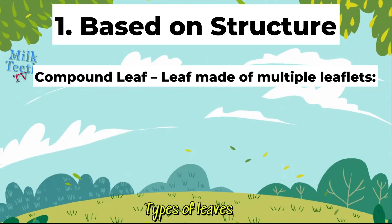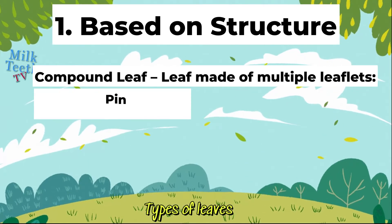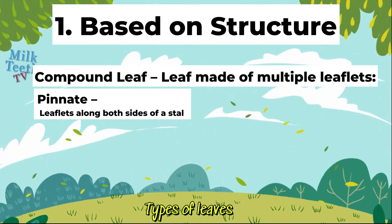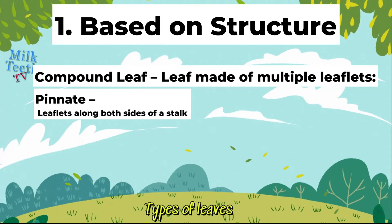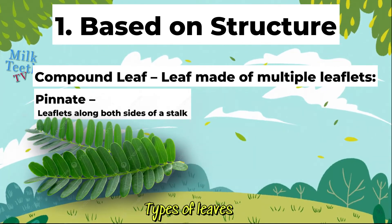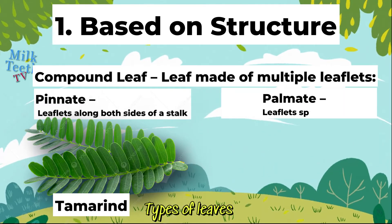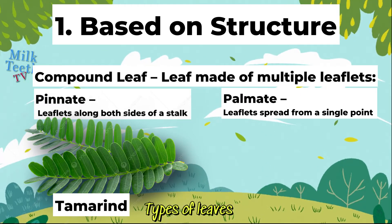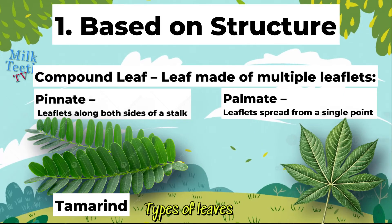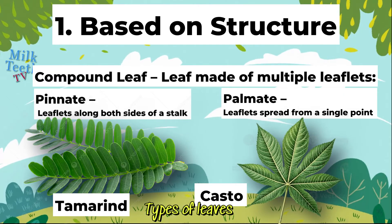A compound leaf can further be classified as pinnate — leaflets along both sides of a stalk, for example tamarind — and palmate — leaflets spread from a single point all around, for example the castor leaf.